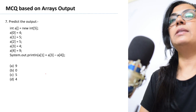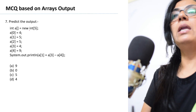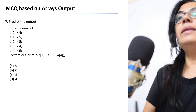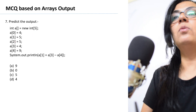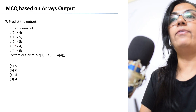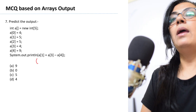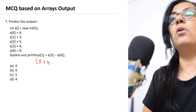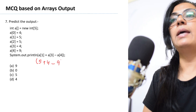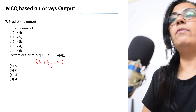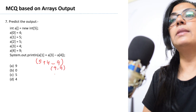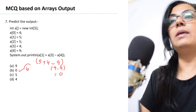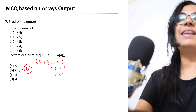Question 7: int a[] = new int[5], with values assigned at indices 0 to 4. a[1] + a[3] - a[4]. a[1] = 5, a[3] = 4, a[4] = 9. So 5 + 4 - 9 = 0. Option B is the correct answer.